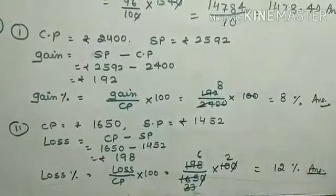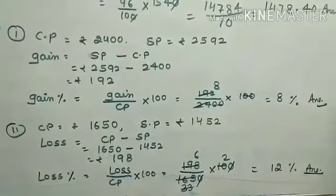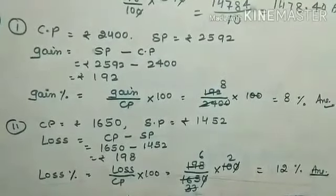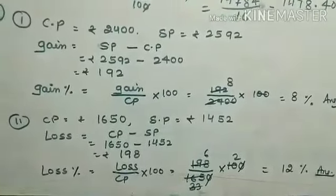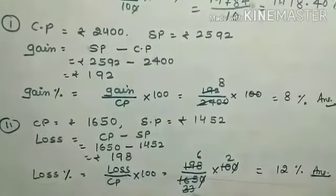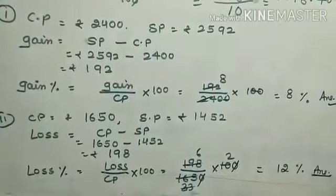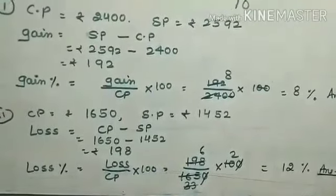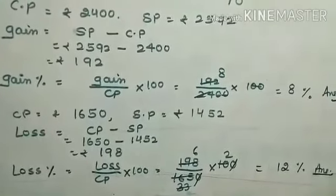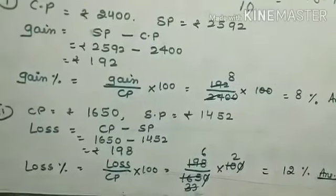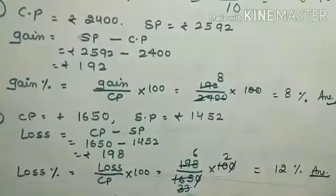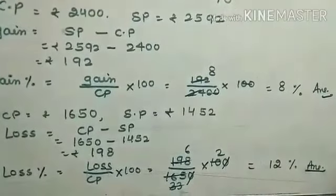Second part: CP = ₹1650, SP = ₹1452. Since CP is greater than SP, this is a loss. Loss = 1650 − 1452 = ₹198. Loss% = (Loss ÷ CP) × 100 = (198 ÷ 1650) × 100 = 12%.